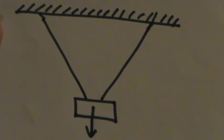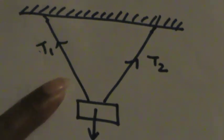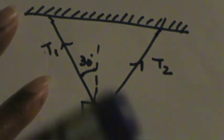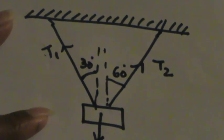I will take the tensions of these two strings as T1 and T2. The angle that T1 makes with the vertical I will take as 30 degrees, and the angle T2 makes with the vertical as 60 degrees, so that these two tensions are perpendicular to each other. What I am asking is: what are the values of T1 and T2?